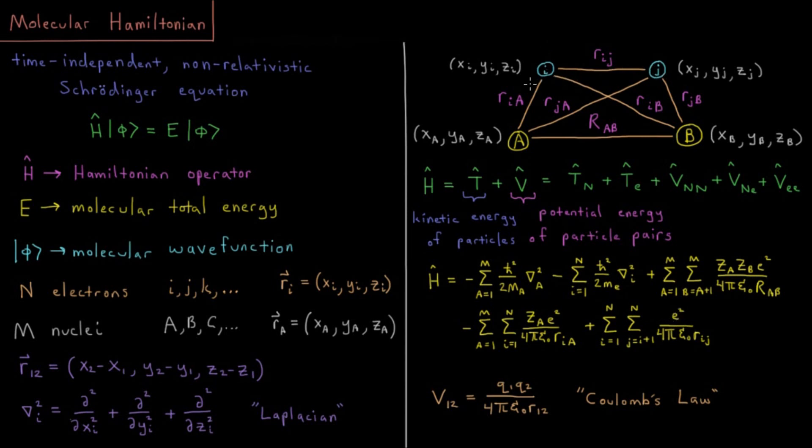e² divided by 4πε₀·rᵢⱼ. The charge of the electron is -e, so (-e)(-e) gives positive e². Divided by 4πε₀·rᵢⱼ, where rᵢⱼ is the distance between electron i and electron j. In this diagram there's only two electrons, so this is a pretty quick sum to do.